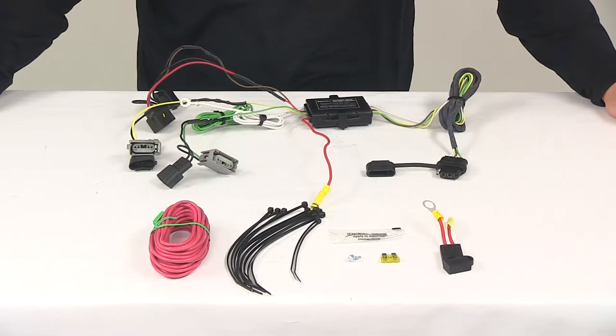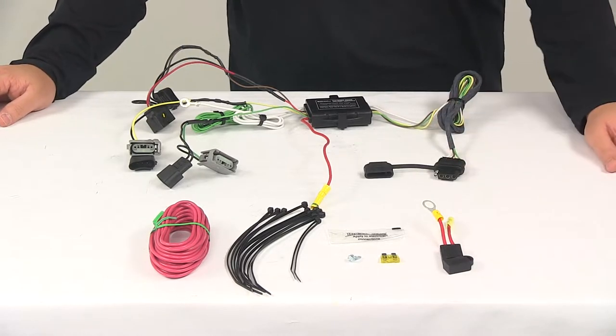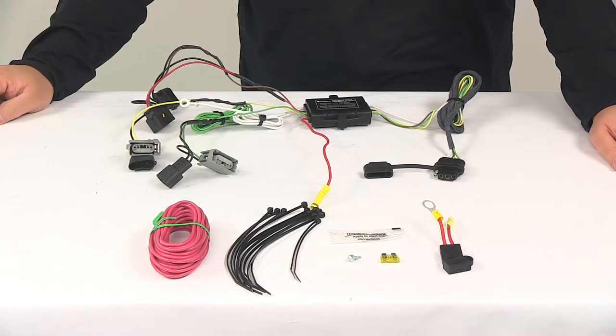Today we're going to be taking a look at the Hopkins plug-in simple vehicle wiring harness with the four-pole flat trailer connector. This product fits certain years and models of the Ford Escape and Mazda Tribute. You can use the vehicle fit guide located at eTrailer.com to see if this is a fit for your vehicle.